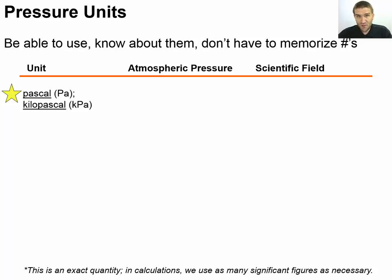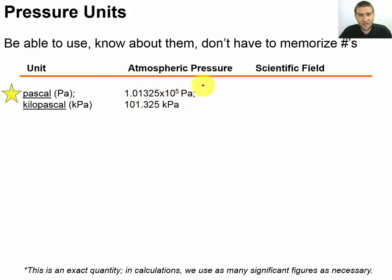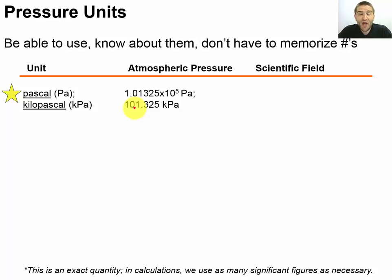The Pascal is our SI unit, and it's small enough that we often talk about kilopascals because that matches up better to atmospheric pressure. Atmospheric pressure is typically around 1.01 times 10 to the fifth Pascals, or 101 kilopascals. That means if you just look at the kilopascal number, it gives you a quick intuitive idea of what percentage of normal atmospheric pressure you're at. If you're at 80 kilopascals, you're at about 80% of normal; at 110, that's 10% higher than typical atmospheric pressure. It's a useful, intuitive unit commonly seen in physics and chemistry.